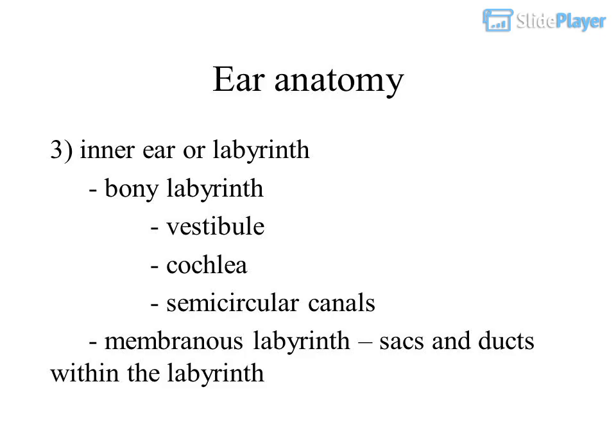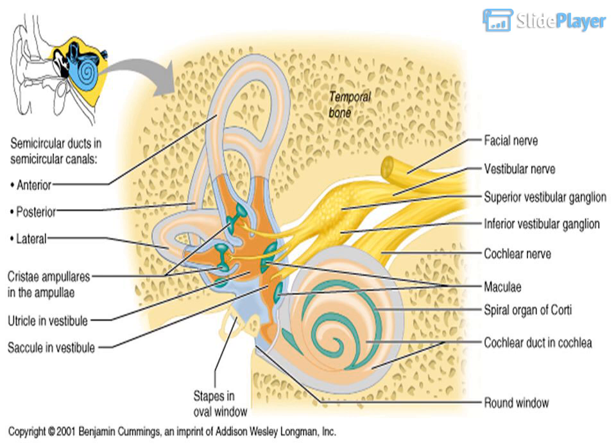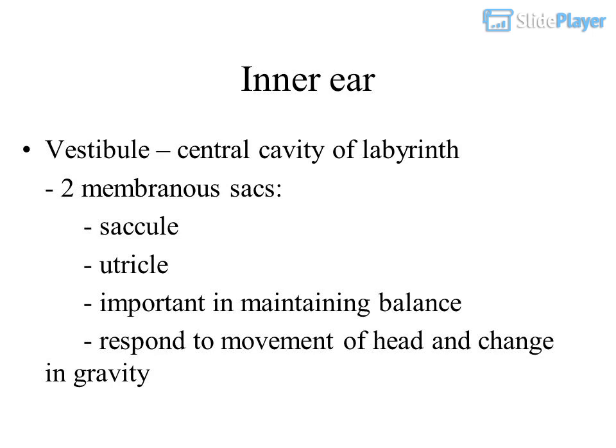The inner ear includes the bony labyrinth — comprising the vestibule, cochlea, and semicircular canals — and the membranous labyrinth, which contains Saxon ducts within the labyrinth. The vestibule is the central cavity of the labyrinth and contains two membranous sacs: the saccule and utricle, which are important in maintaining balance and respond to movement of the head and changes in gravity.